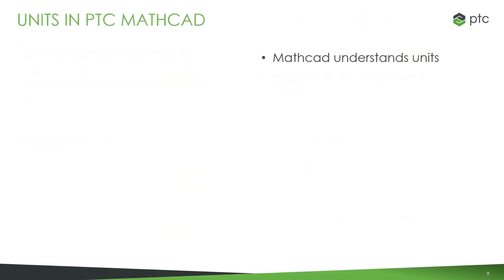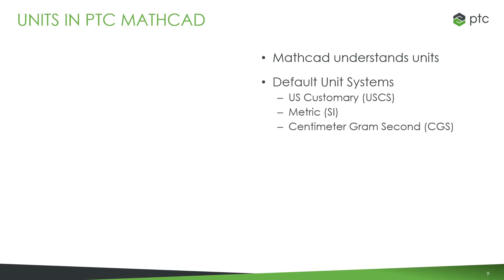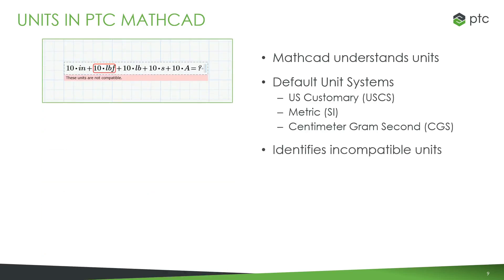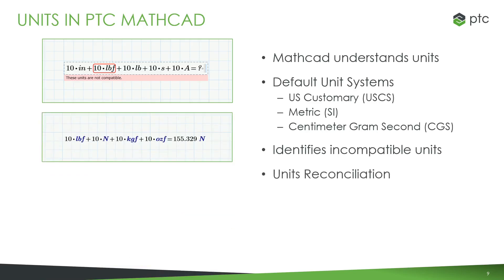Using MathCAD with Creo Parametric helps solve the ages-old problem of units. Units are built into MathCAD — you can use whatever units you want when defining your engineering calculations. You have three default unit systems: United States Customary, SI (also known as the metric system), and centimeter-gram-second. If you try to perform math with incompatible quantities, like trying to add a length to a force to a time unit, MathCAD will highlight your error. If you work with different units for the same quantity such as length, mass, force, or pressure, MathCAD understands them and will report the result in the worksheet's units.